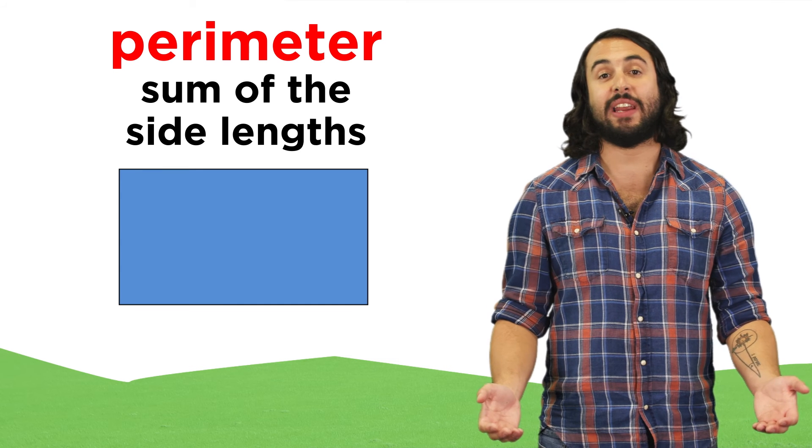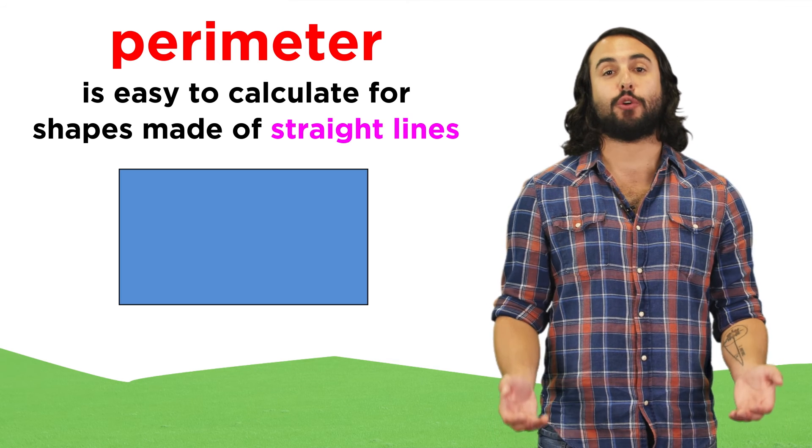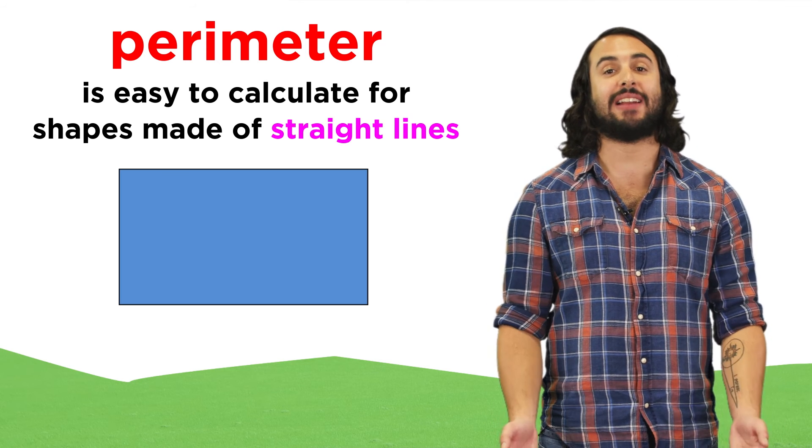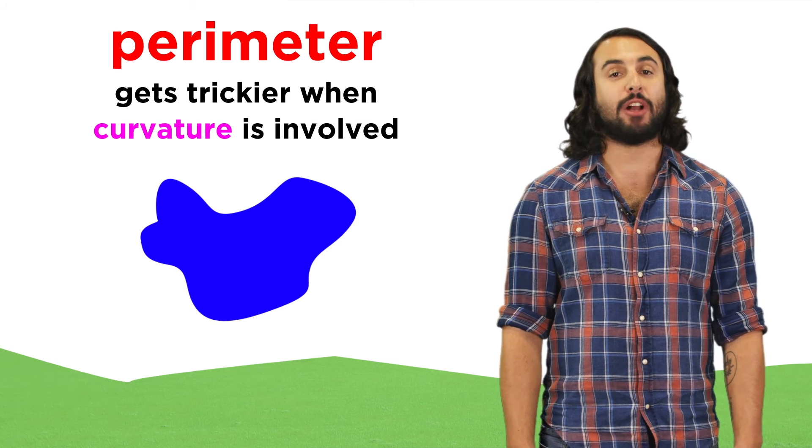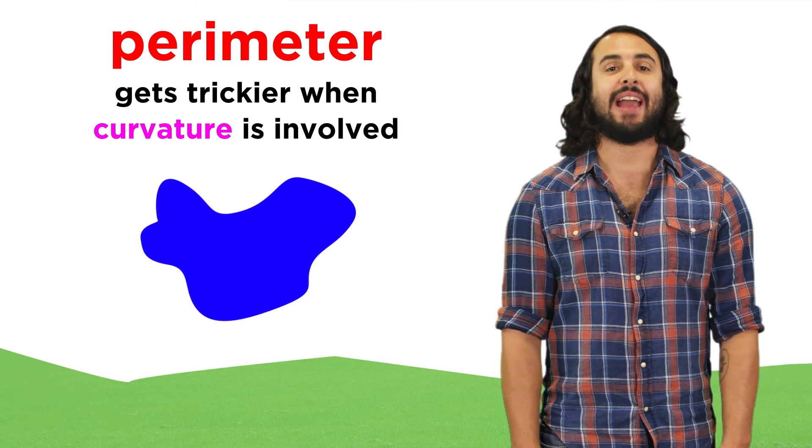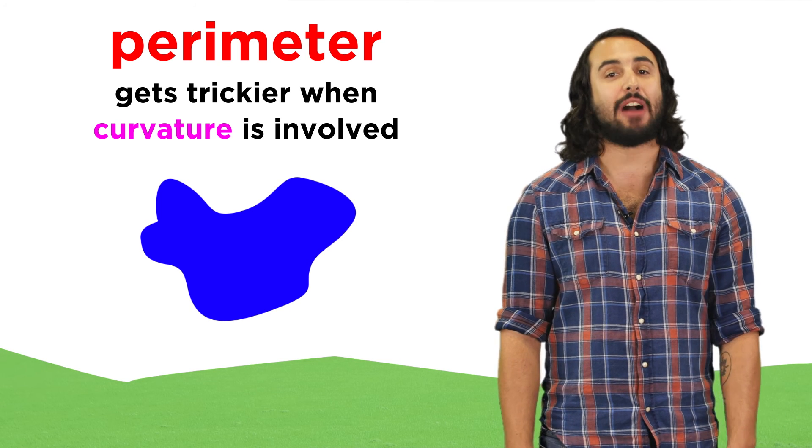So that's all we need to know to find the perimeter of any polygon. Remember, this works for shapes made of straight line segments only. When we introduce curvature, things get much trickier very quickly, and if the curvature is not perfectly circular, we will need calculus to do it.